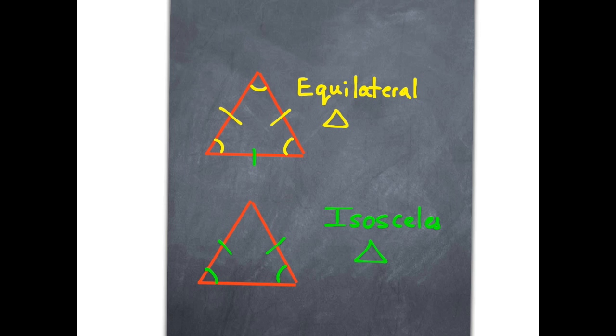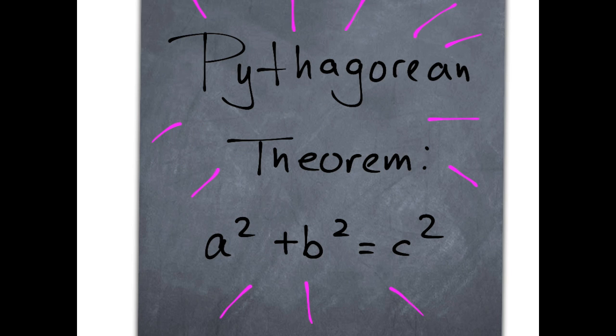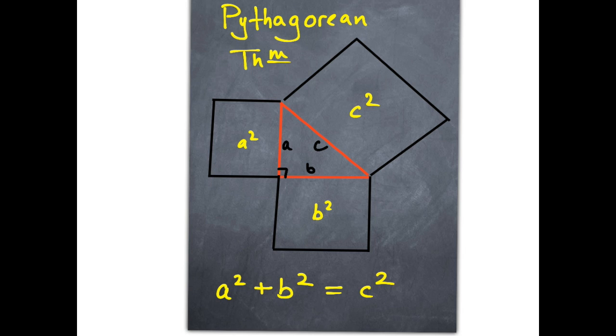We learned about the Pythagorean theorem and its uses. Pythagoras was credited with the theorem but was it just the Rus? Ancient Egypt, China, and Babylonia had knowledge before him.